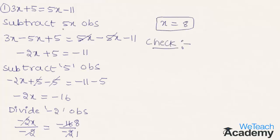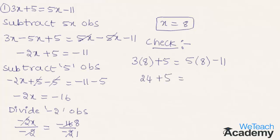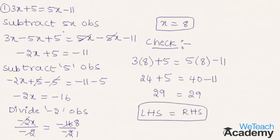Now let us substitute x equal to 8 in the given equation. We get 3 into 8 plus 5 equal to 5 into 8 minus 11. On the LHS, 3 into 8 is 24, plus 5 gives 29. On the RHS, 5 into 8 is 40, minus 11 gives 29. LHS equals RHS, so the solution of 3x plus 5 equal to 5x minus 11 is x equal to 8.